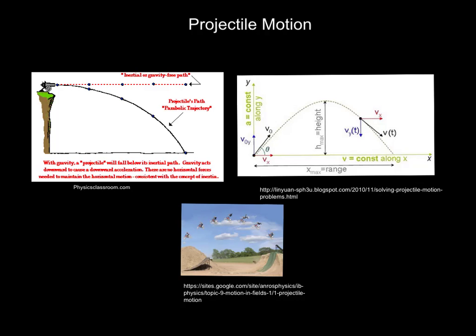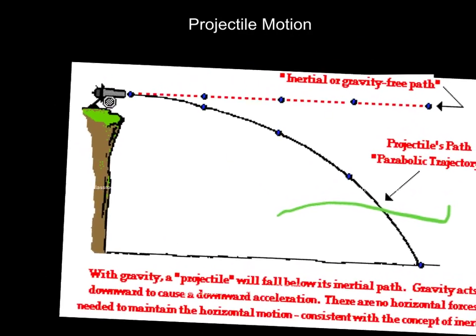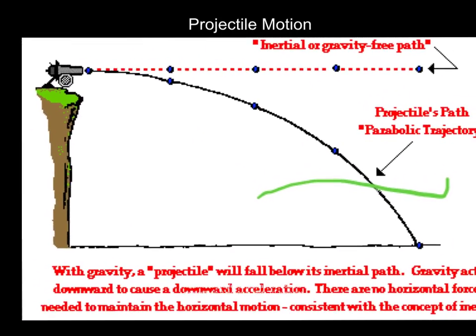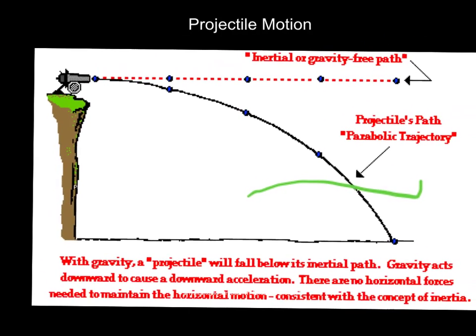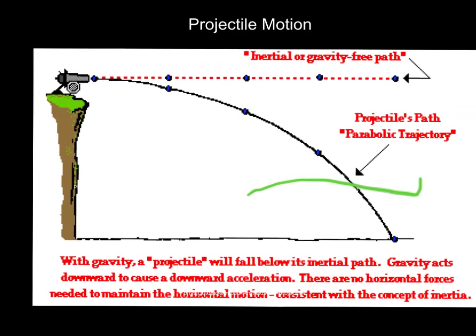Projectile motion can be as simple as a cannon being shot off of a cliff. Without gravity, the ball would just follow a straight path, but with gravity, it's going to follow this curved parabolic path.